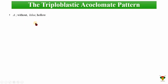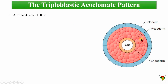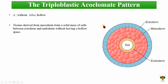Organisms that are without a coelom — that don't have any hollow space in the body between the outer body wall — are considered acoelomates. In the diagram, ectoderm, mesoderm, and endoderm are all present, as it is a triploblastic organism. However, in the mesoderm, you cannot find any empty or hollow space or body cavity. The cells are densely compact. This solid mass of cells between ectoderm and endoderm without leaving a hollow space is known as acoelomic, and organisms following this pattern are known as acoelomates.